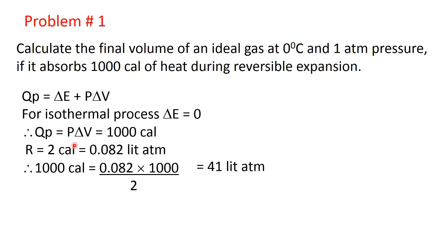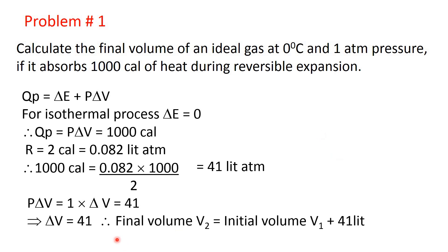So this 41 liter-atmospheres equals Qp, that is P delta V, that is the work of expansion. So P delta V equals P — P is 1 atmosphere — into delta V equals 41. So delta V equals 41 liters. The final volume will be the initial volume plus 41 liters, since it is expansion — V1 plus 41 liters.